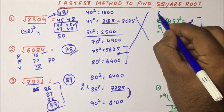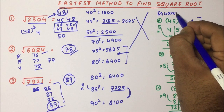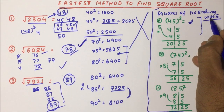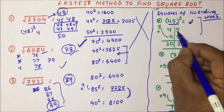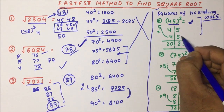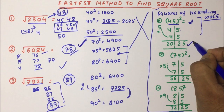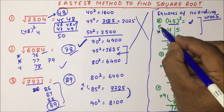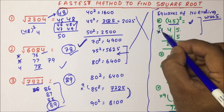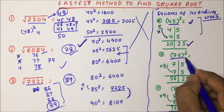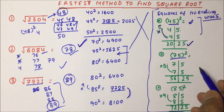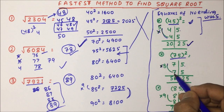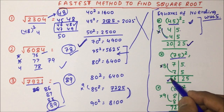Now let's look at the shortcut for squares of numbers ending with 5. For 45 squared: 5 into 5 is 25, and you increase 4 by 1 to get 5, so 4 into 5 is 20 — giving 2025. For 75 squared: 5 into 5 is 25, and you increase 7 by 1 to get 8, so 7 into 8 is 56 — giving 5625.